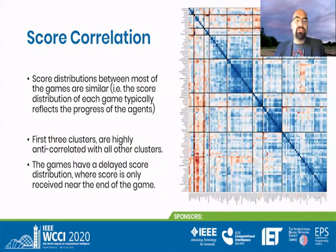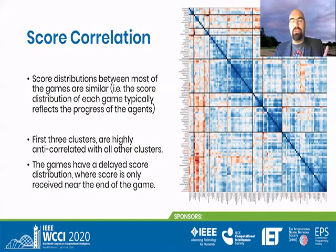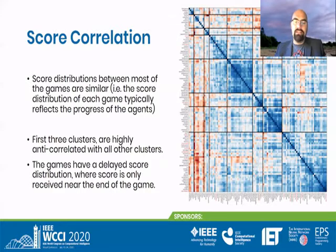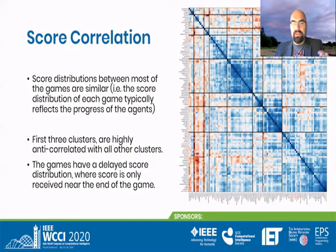If we look at score distributions or the correlation between the scores, we see a similar image. Again, there are several clusters of games that are highly correlated, and some of them are anti-correlated — particularly with three clusters at the beginning, which mostly have delayed scoring mechanisms. So we already see here by looking at this that there are families of games that seem to have similar outcomes and test similar things, and we can already identify certain elements that differ.